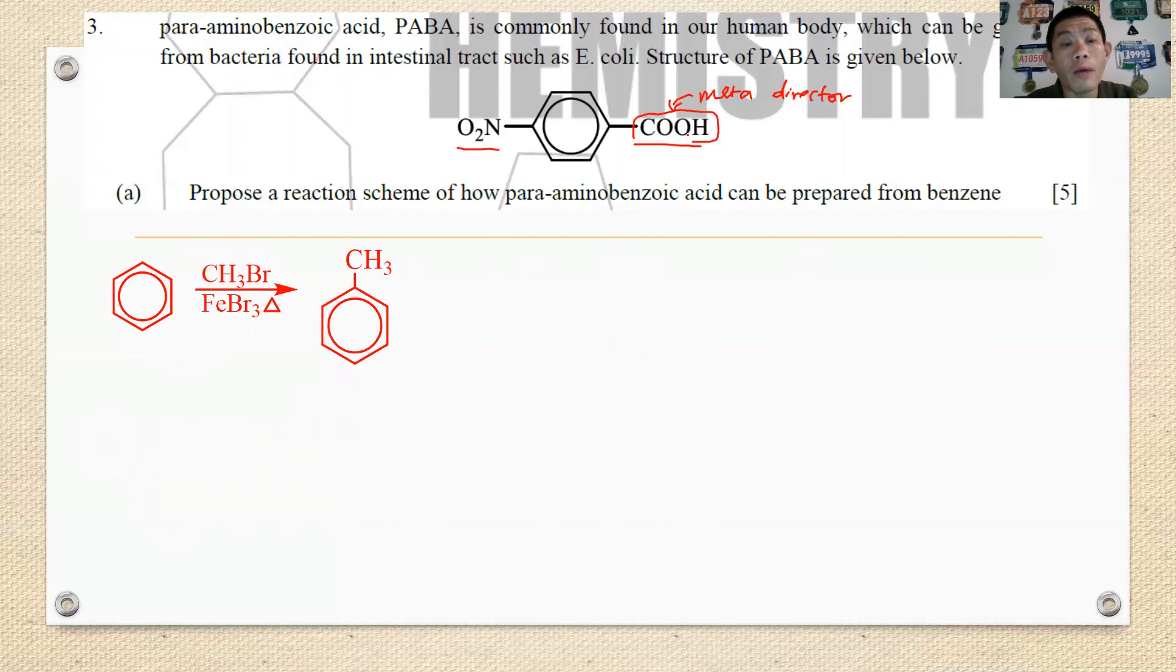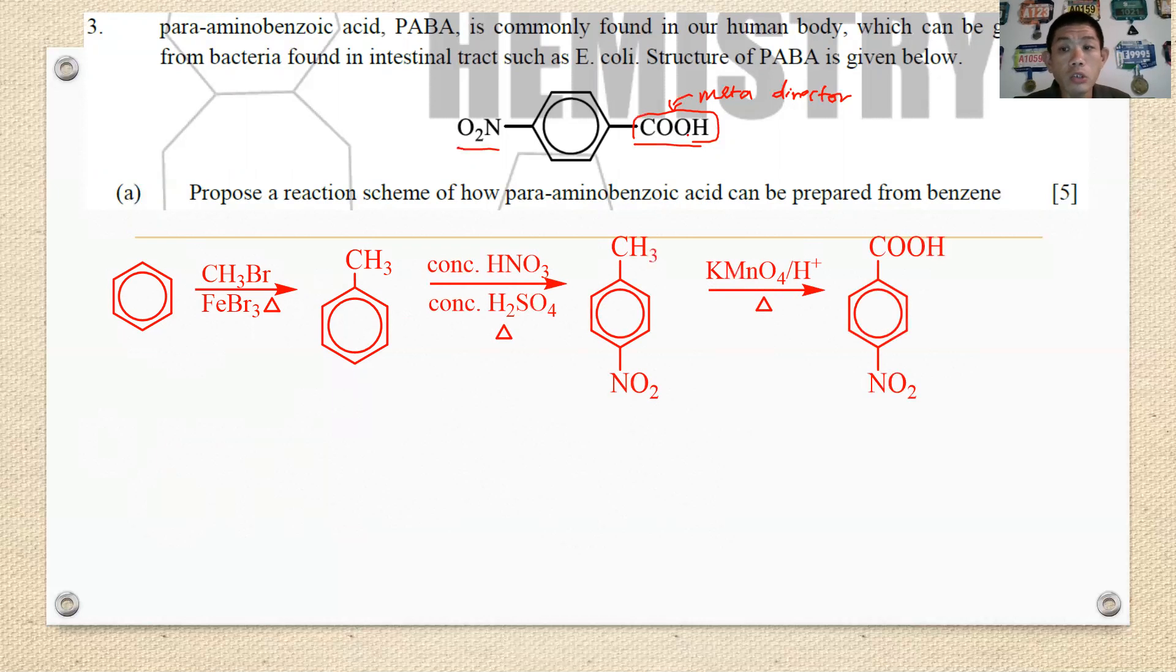Then methyl benzene you do not oxidize first, instead you put nitration first so that because CH3 is an ortho para director. So once you have CH3 methyl benzene as a compound formed, you put nitrogen by using concentrated nitric acid followed by concentrated sulfuric acid under reflux. You'll form the para nitro toluene, only then you undergo oxidation by using KMnO4 plus H+ under reflux to form the PABA compound. Usually in this case each of the structure proposed is one mark. Each reagent condition one mark, each intermediate one mark. This is how STPM will mark.